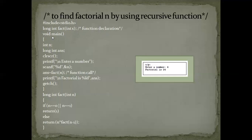Program execution always starts from the main function. I have declared the variables: n and long int answer. Long int is the data type, and answer is the variable where I will store the result of the factorial operation. After a clear screen prompt, the user enters a number. I am reading that number using the scanf statement. Imagine I have entered the number 4 — I need to find the factorial of 4.